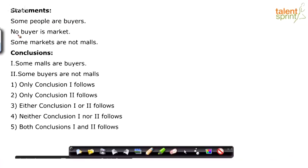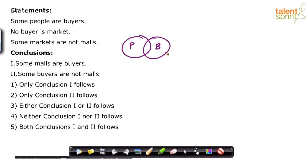Some people are buyers. No buyer is market. Some markets are not malls. Only two conclusions are given to us: some malls are buyers, and some buyers are not malls. Let us draw the basic diagram first. Some people are buyers — so people and buyers overlap. No buyer is market — so these two will not touch each other.